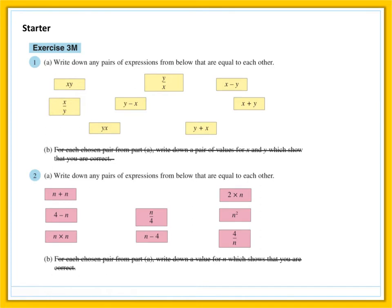and then unpause to check your answers to Part A. So, you should have found that the matching pairs are x, y and y, x. Highlight those in red. The other matching pair that we can have is x plus y and y plus x. And this is because addition can be done in any order, multiplication can be done in any order,